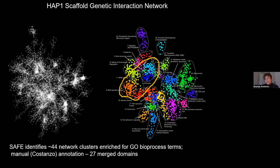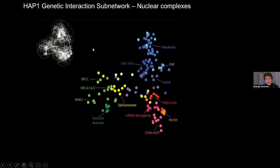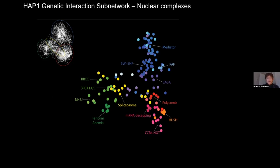We can start to zoom in on different regions of the network — for example the nuclear network — and see that just as before, there is enrichment for protein complexes within sub-regions. Even with only a couple hundred screens so far, we can see components of the spliceosome clustering together, various chromatin remodelers and SWI/SNF complex, and various transcription factors clustering together. We're hoping that uncharacterized genes being placed on the network can be used for functional genome annotation.